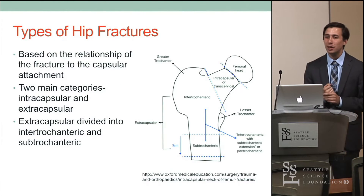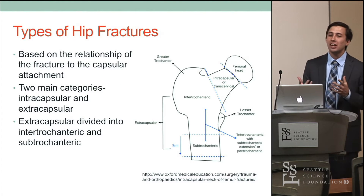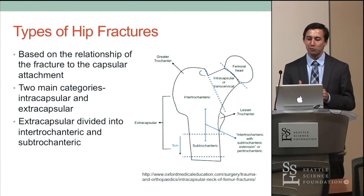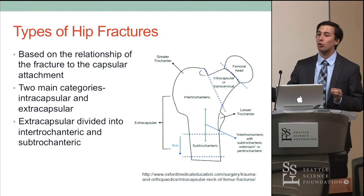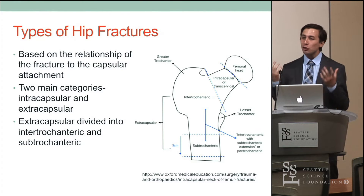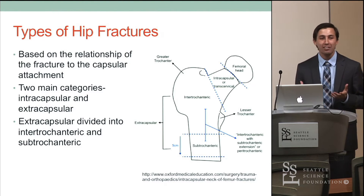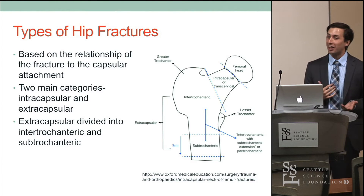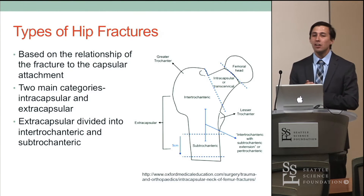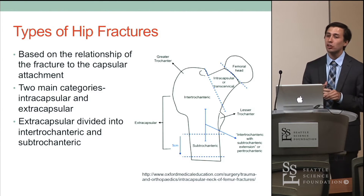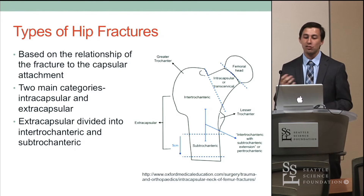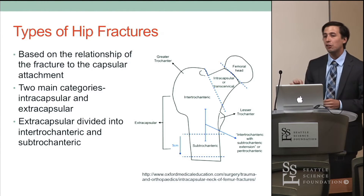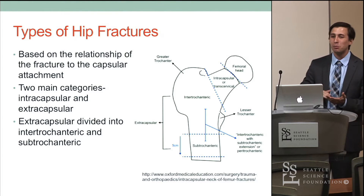Even though they're called hip fractures, we're not including those of the acetabulum or the femoral head — so we're talking about the femoral neck downward. The two main groups are intercapsular, which are fractures of the femoral neck within the capsule, and extracapsular, those outside the capsule. Within extracapsular, you have intertrochanteric and subtrochanteric fractures. Subtrochanteric runs from the most inferior aspect of the lesser trochanter to about five centimeters distal to that.